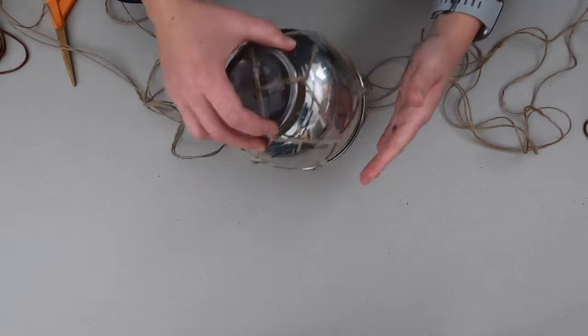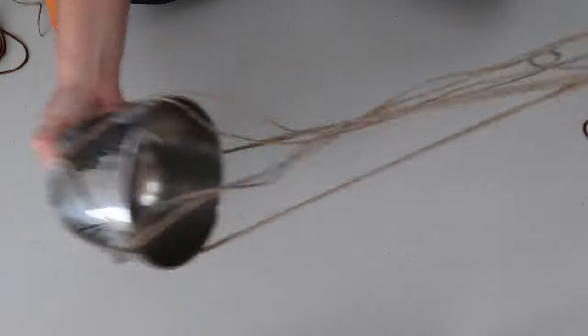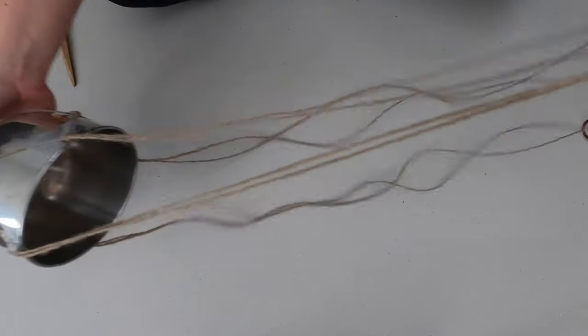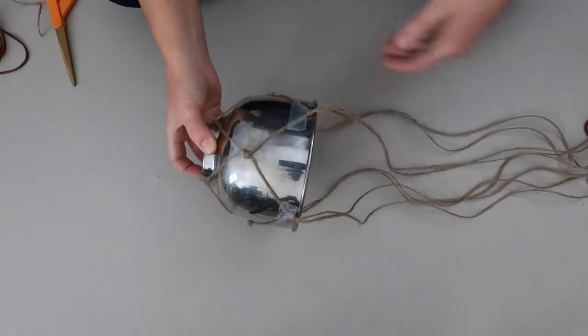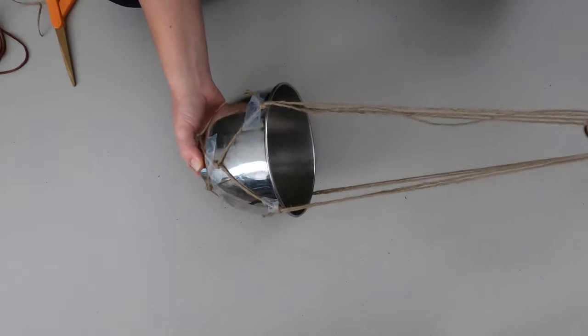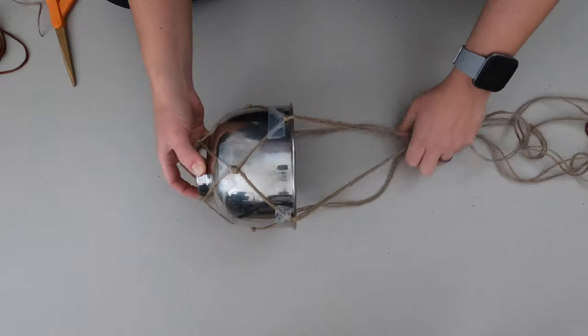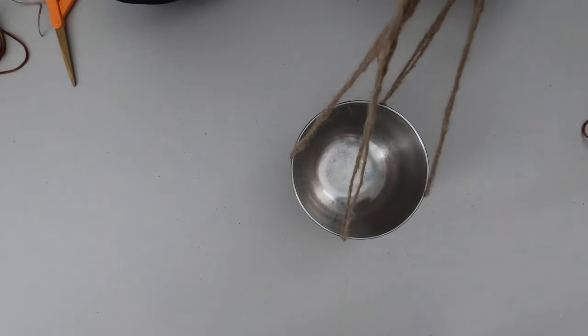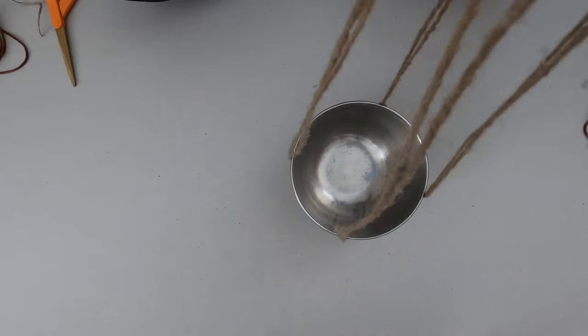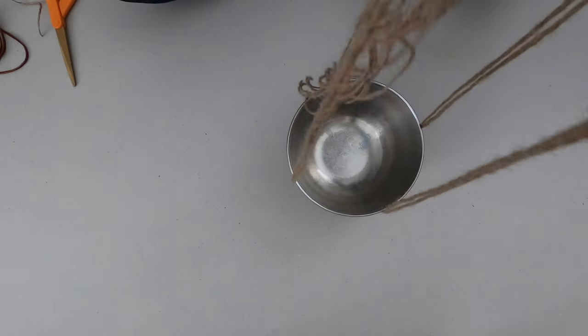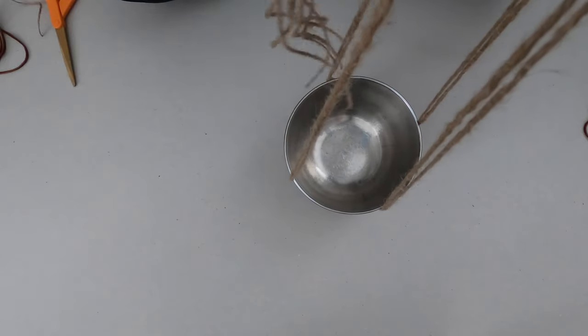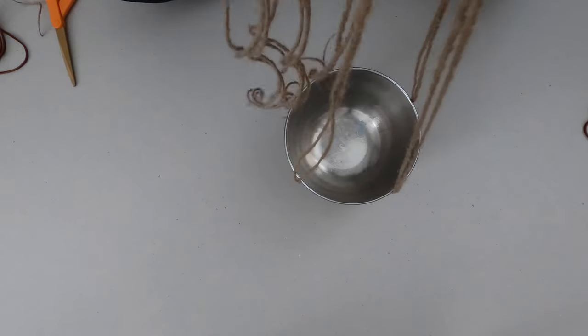Okay so now that you have all of these done up and you can see how long my string is, I probably had it a little too long. But now what you're going to do is you're going to stand it up this way. And you're going to just pull your string up and tighten it. Try to make it as level as possible and then you'll tie a knot at the top.